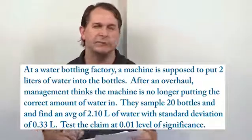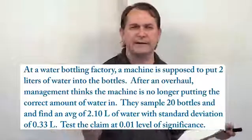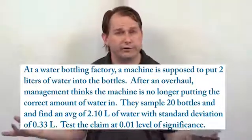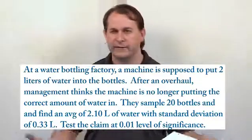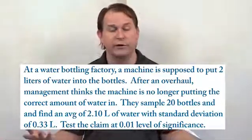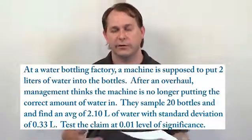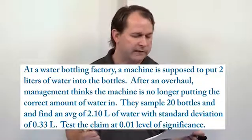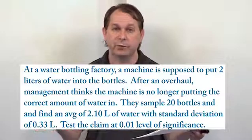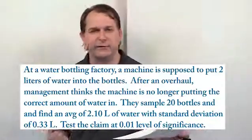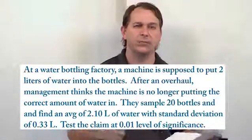So this is a slightly different kind of problem. Basically you have a water bottling plant, bottles come down the assembly line and the machine squirts water in there. It's supposed to put two liters of water in, but they overhauled the machine, upgraded some stuff, and management now thinks the machine is no longer putting two liters — the appropriate amount — into the bottles. So we do some sampling: we test 20 bottles and get values with a standard deviation, and we want to test at the 0.01 level of significance to figure out if the machine is working or not.